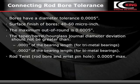For connecting rod bore tolerances, bores have a diameter tolerance of half a thousandths — the same as the mains. Surface finish is also the same as the mains: 40 to 60 micro-inch. Out of roundness is five tenths.